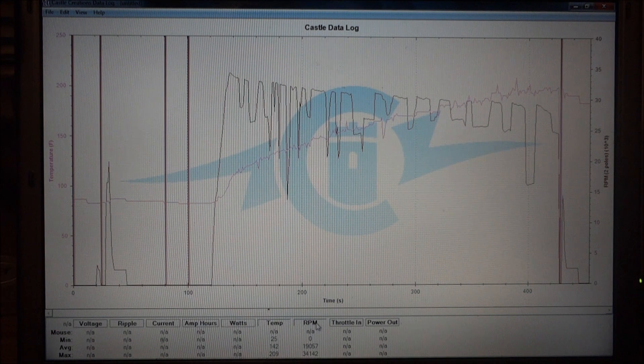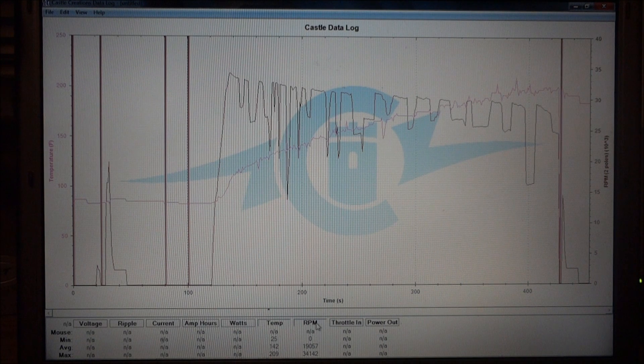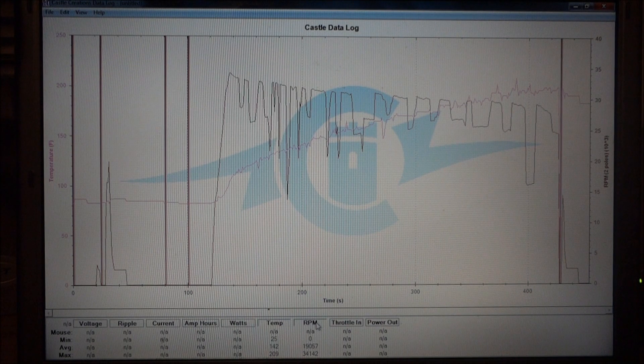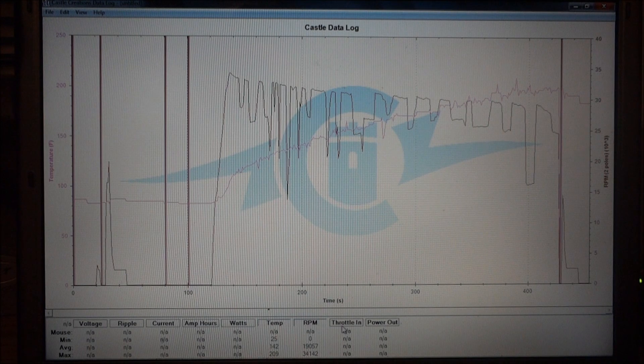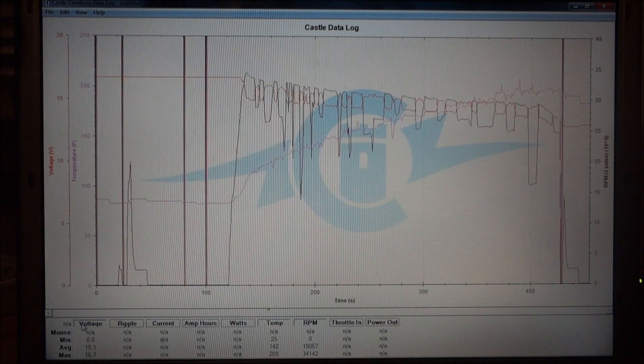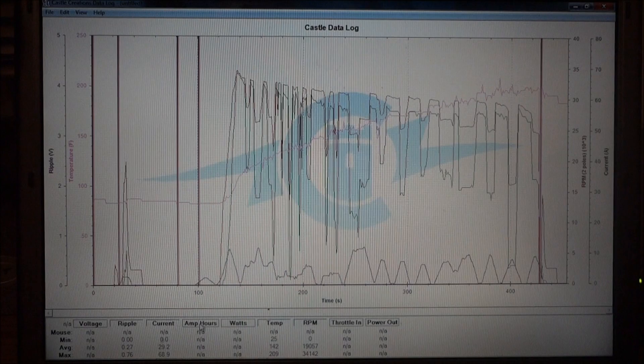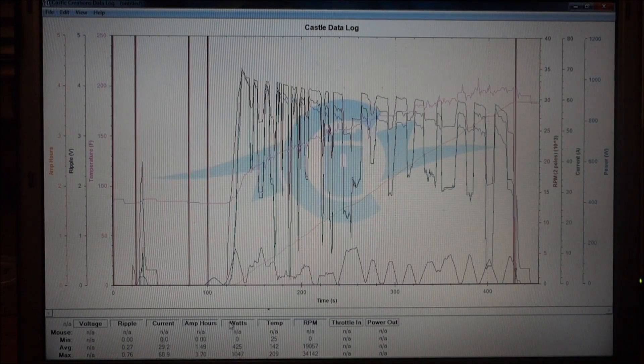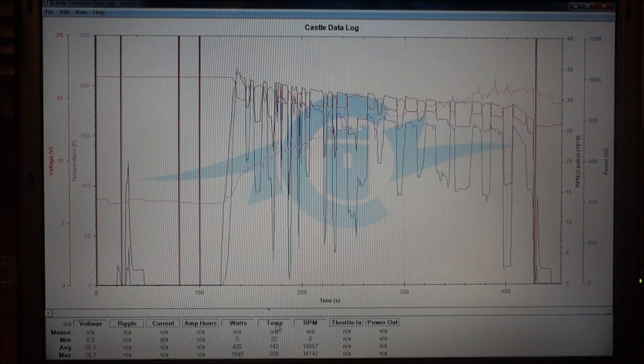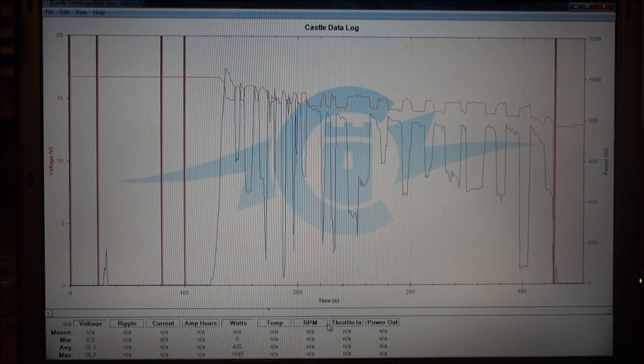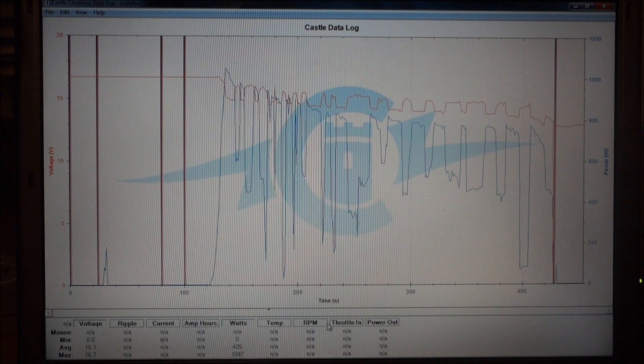RPM, maximum RPM was 34,142. That is a 430 kV motor. And watts, maximum watts was 1,047. Average was 425.